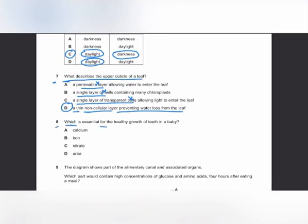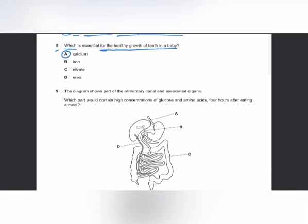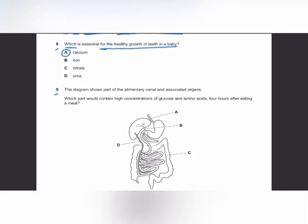MCQ number 8: for healthy growth of teeth and bones in a baby, you need calcium and vitamin D. The answer is A.